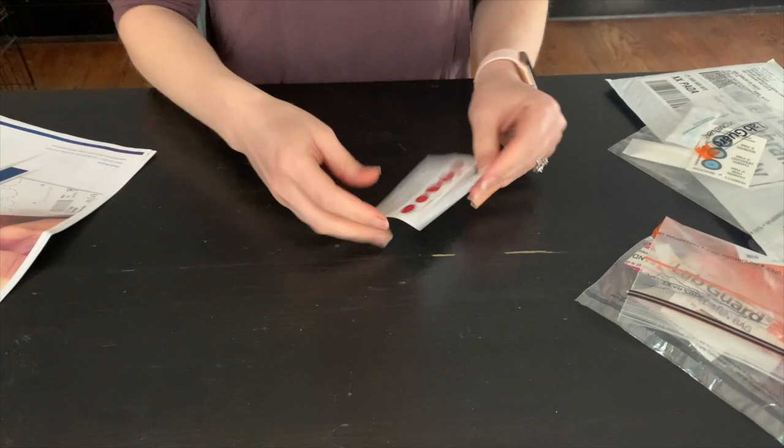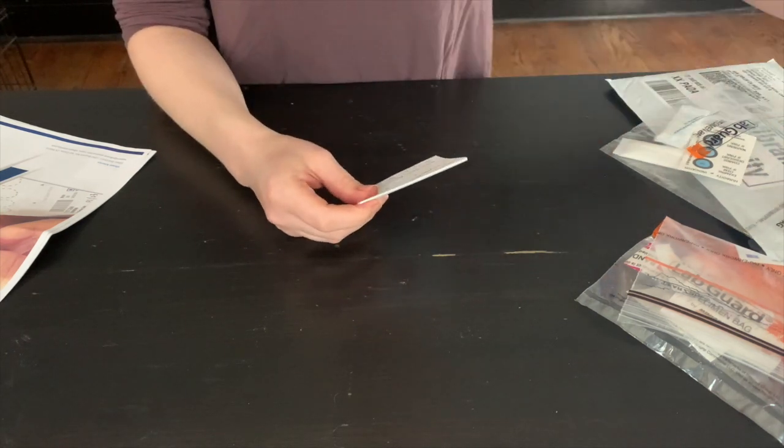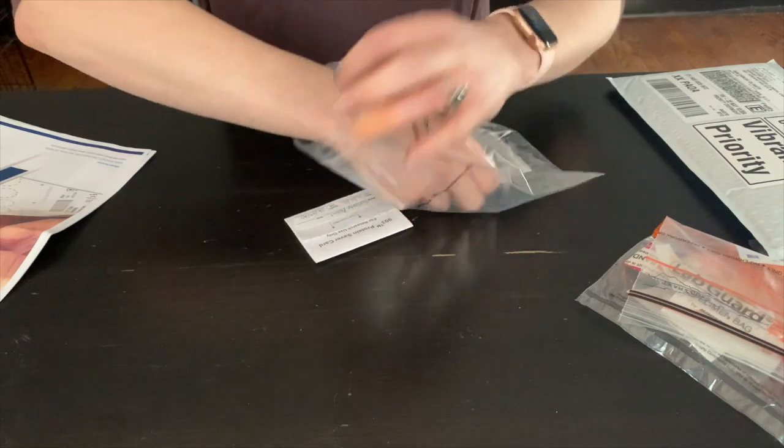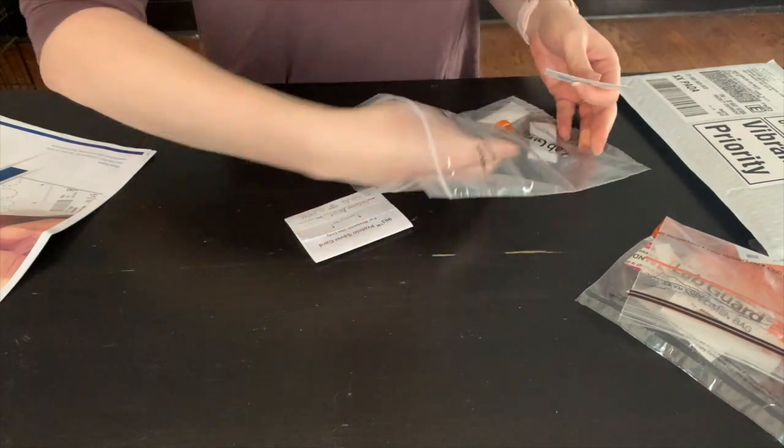After the blood spots have dried for at least two hours, fold the collection card. Place it in the empty biohazard bag along with the humidity indicator and silica gel packs and seal it tight.